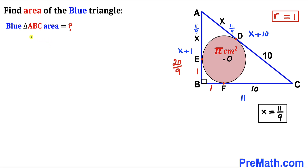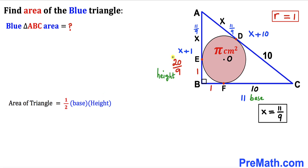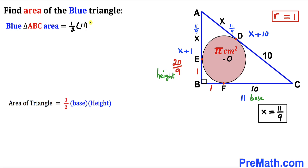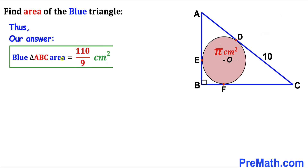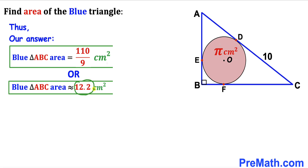Finally, let's calculate the area of blue triangle ABC. Using area = ½ × base × height, with base BC = 11 and height AB = 20/9: area = ½ × 11 × 20/9 = 110/9 centimeter square, which is approximately 12.2 cm². Thanks for watching and please subscribe for more exciting videos!